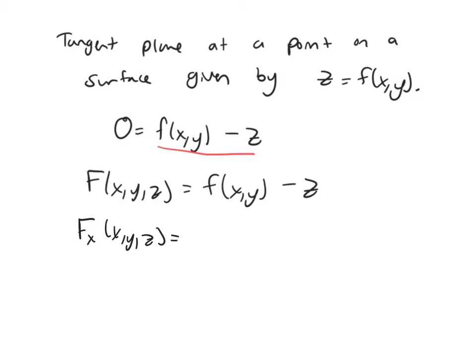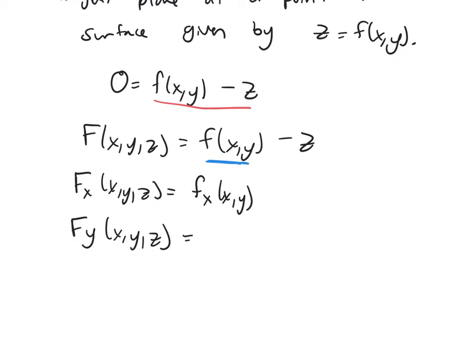Well, the only places I'm going to have x's in are in this first function right here, so it'll be the partial derivative of little f. And then the partial derivative with respect to y, still I only have a y in that first function, so it'll be f_y.